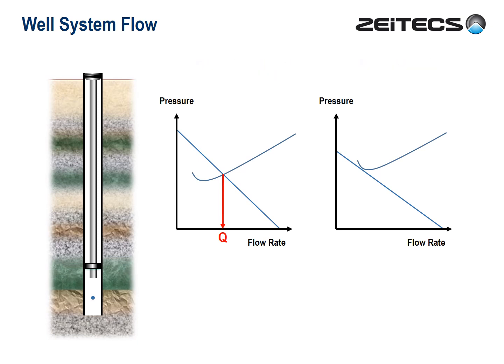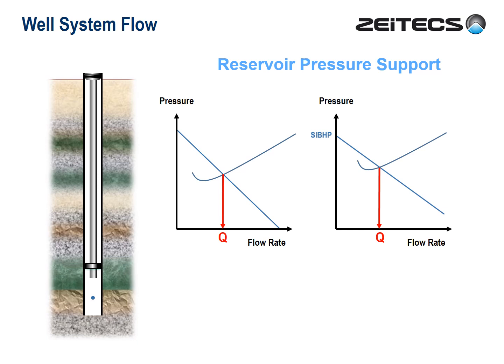But before we think about artificial lift, let's talk about other ways we can make this well flow. Firstly, we can lift the inflow performance line. What we're doing here is increasing the bottom hole pressure without changing the gradient of the line, which is the productivity index. We make the lines cross, and the well flows. This is typically what we do with reservoir pressure support — for example, water injection, produced water re-injection, or gas injection.